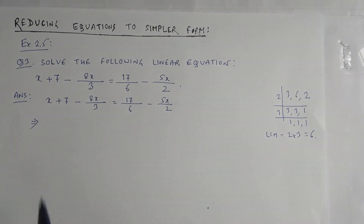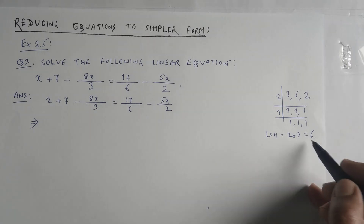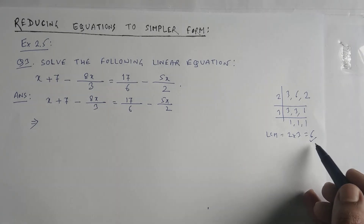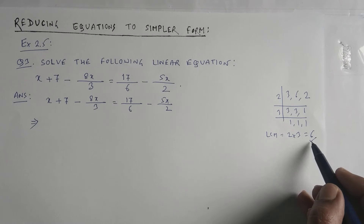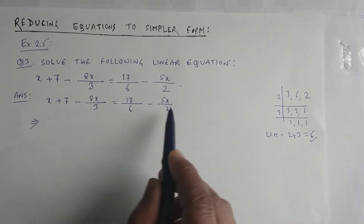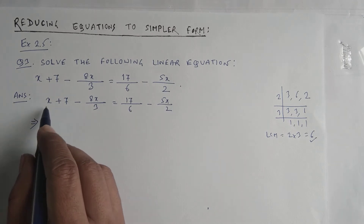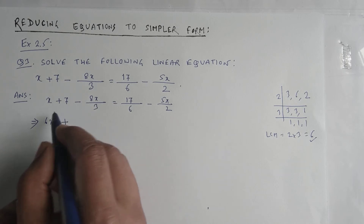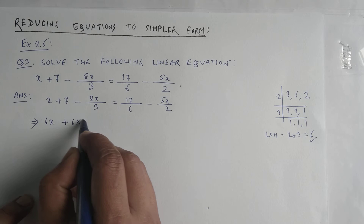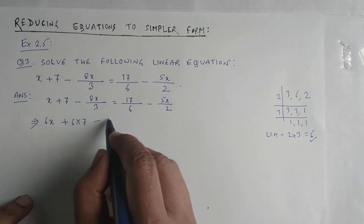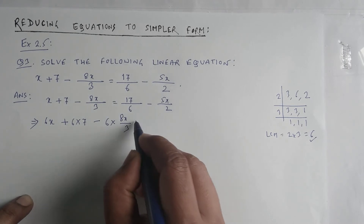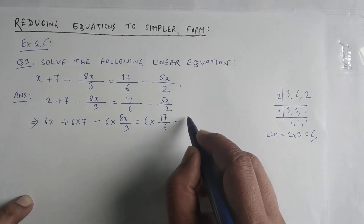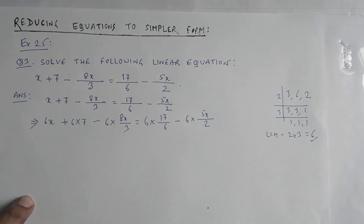Now we can multiply all the terms in the given equation by the LCM 6, doing term-wise multiplication — each term separately multiplied by 6. So: 6 into x, plus 6 into 7, minus 6 into 8x by 3, equals 6 into 17 by 6, minus 6 into 5x by 2.